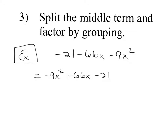In the next step, we want to make sure two things: the lead coefficient is positive — currently it's not — and we want to factor out the greatest common factor if it's anything other than 1. We can do both of those things in this next step. The GCF of this problem is negative 3, so if I factor a negative 3 out, that's going to leave me with 3x squared plus 22x minus 7.